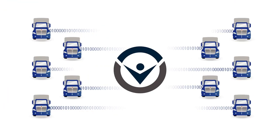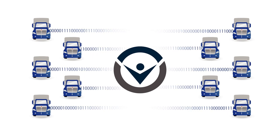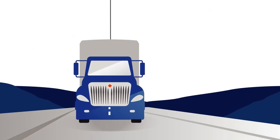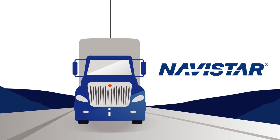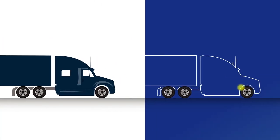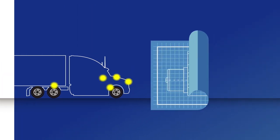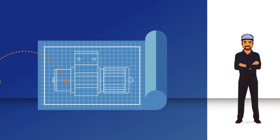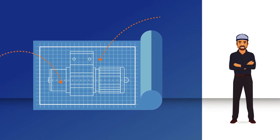Navistar uses On-Command Connection to improve our products based on the insights we receive, so that we can maximize performance for the long haul. Navistar engineers monitor and look for trends in real-time vehicle performance data. This early detection system lets Navistar more proactively address vehicle performance issues for all customers, not just those experiencing issues.